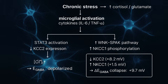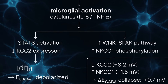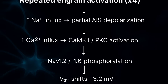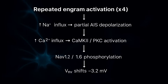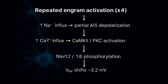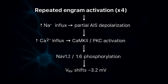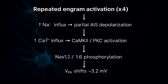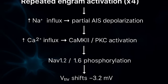This functionally removes another 9.7 mV from the neuron's safety margin. Repeated activation of the same engrams leads to sodium and calcium influx at the axon initial segment. CaMKII and PKC become activated, phosphorylating Nav1.2 and Nav1.6 channels, which lowers the firing threshold by about 3.2 mV, affecting around 5% of neurons.